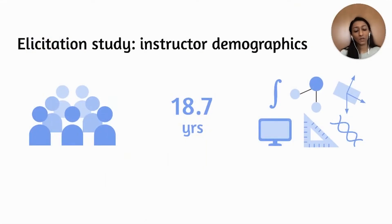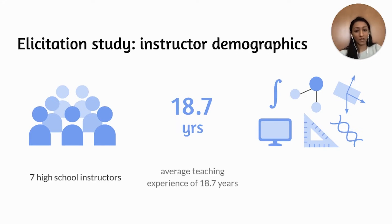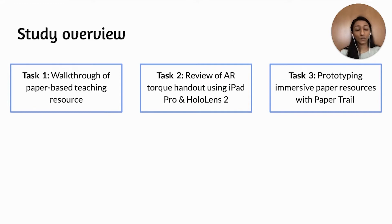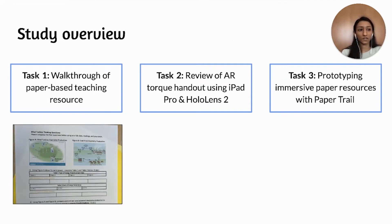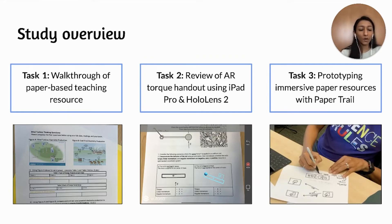Our paper discusses two evaluations with PhD students and XR design experts to refine the design of PaperTrail, but in this presentation, I will focus on our elicitation study with high school instructors. To explore whether and how instructors could envision using AR to complement their existing teaching workflows, we conducted an elicitation study with seven high school instructors who had an average teaching experience of 18 years. In our study, they explored how AR could enhance a variety of topics they currently teach, including physics and math, sustainable energy, computer-aided manufacturing, cellular biology, and media and research skills. The study consisted of three tasks: a walkthrough of a paper-based teaching resource the teachers brought with them, a review of our AR Torque handout using both the iPad Pro and the HoloLens 2, and an elicitation task where the instructors proposed and prototyped AR interactions for their paper-based teaching resource using either the iPad Pro or the HoloLens 2.